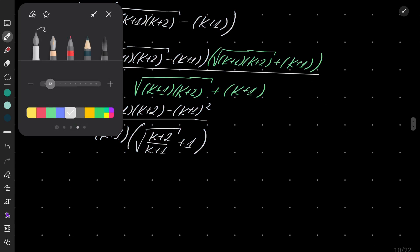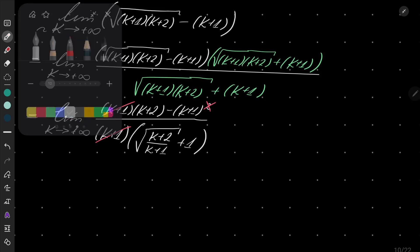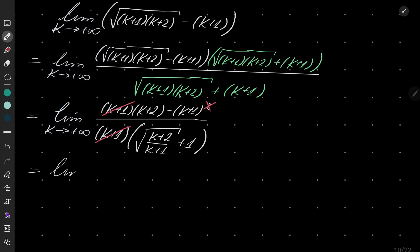And now let's take a look. Here I have K plus 1, here I have K plus 1 squared, and here I have K plus 1, so it's gone. And I am left with K plus 2 minus K plus 1, so it's just 1 in the numerator. And in the denominator,